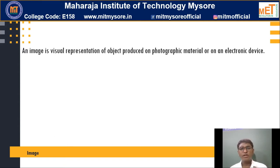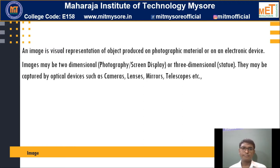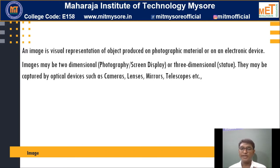Images are of two-dimensional and three-dimensional as well. Two-dimensional images are photographic images or a screen display — the monitor you are able to see now is a two-dimensional image. A statue, if you go and observe, is a three-dimensional image. Objects which capture images include a camera, lenses, a mirror, and a telescope. These objects capture pictures which we call images, which are two-dimensional in nature in a broader sense.